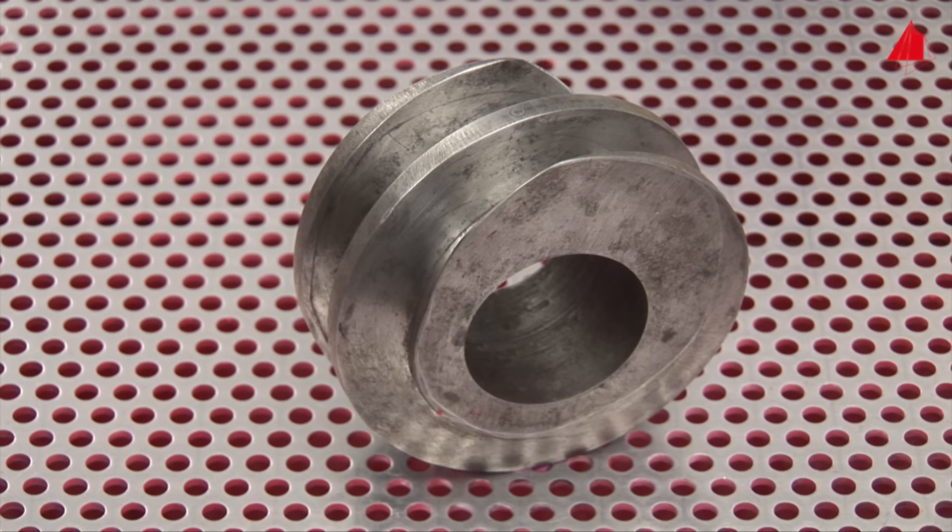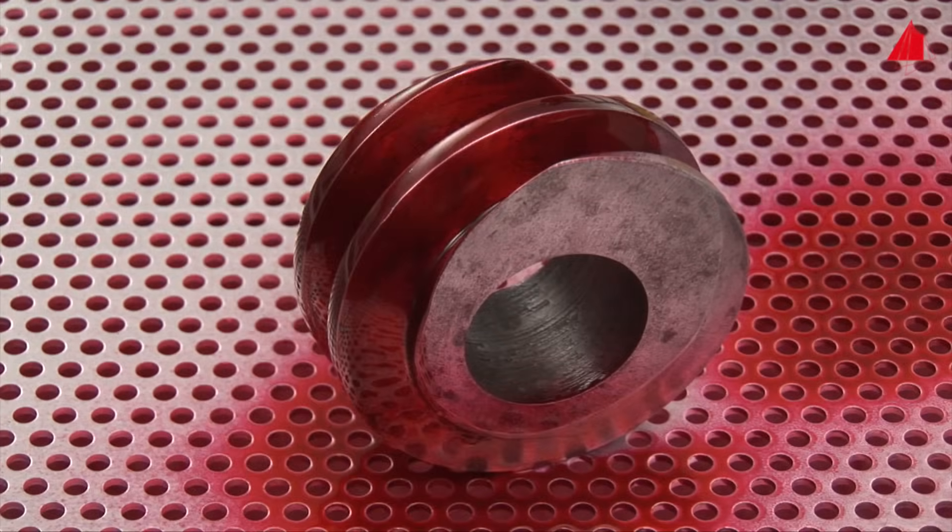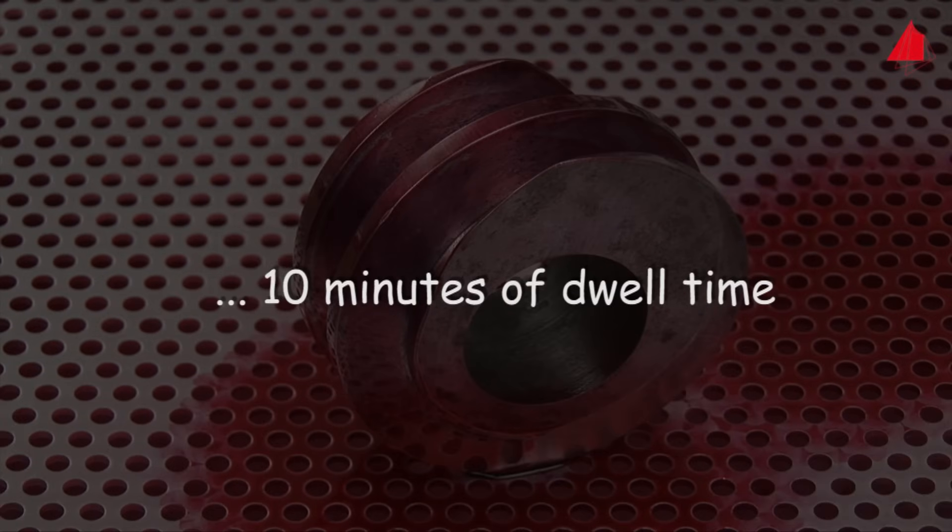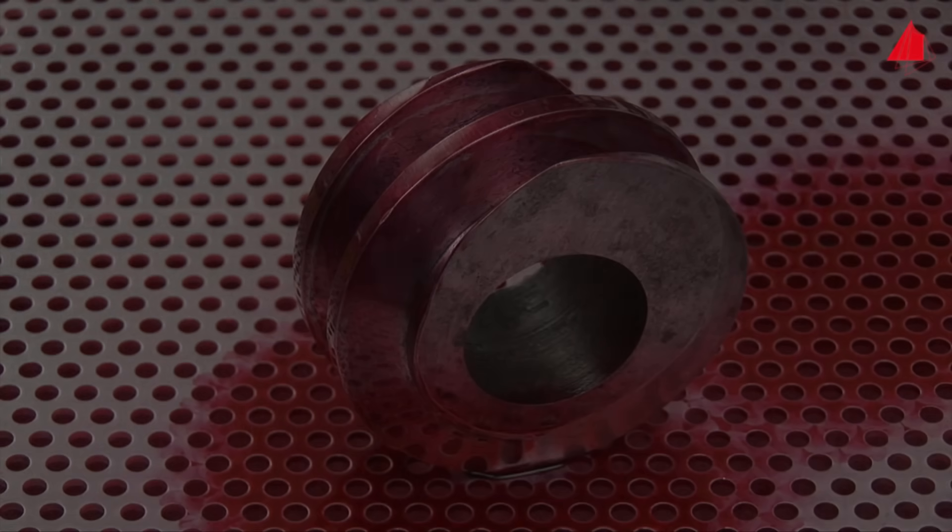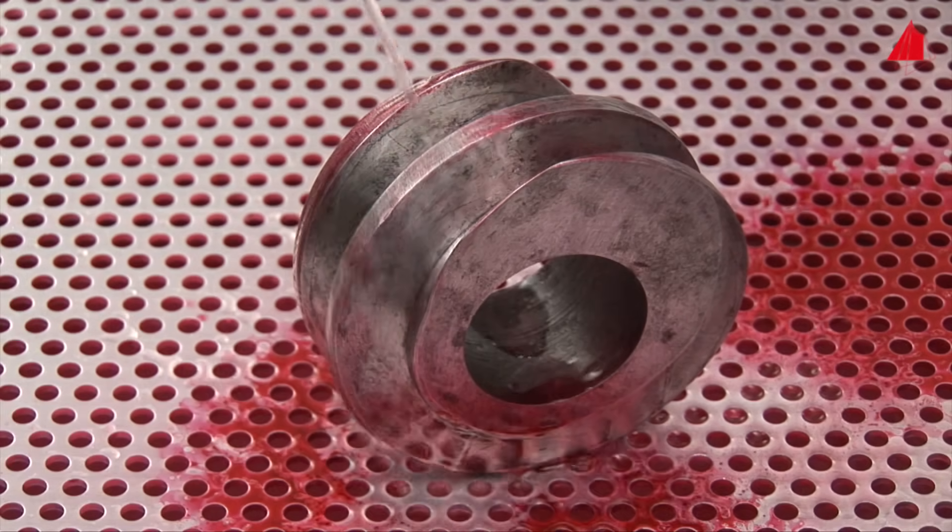First in line is the worm gear shaft. The material tester applies the penetrant. After a dwell time of about 10 minutes, she removes the excess penetrant from the surface by rinsing the test piece gently with water.